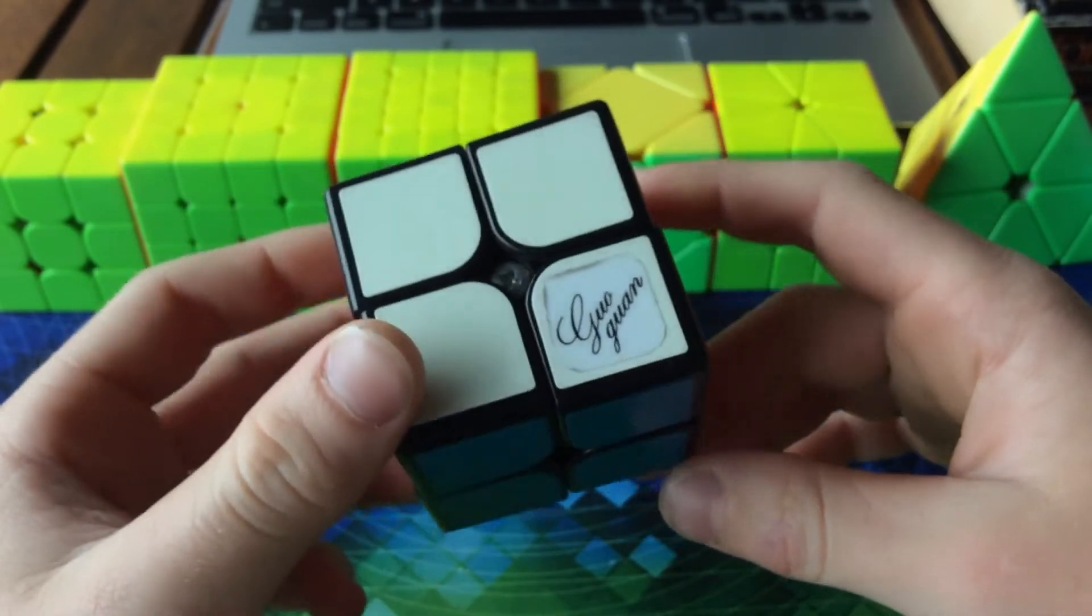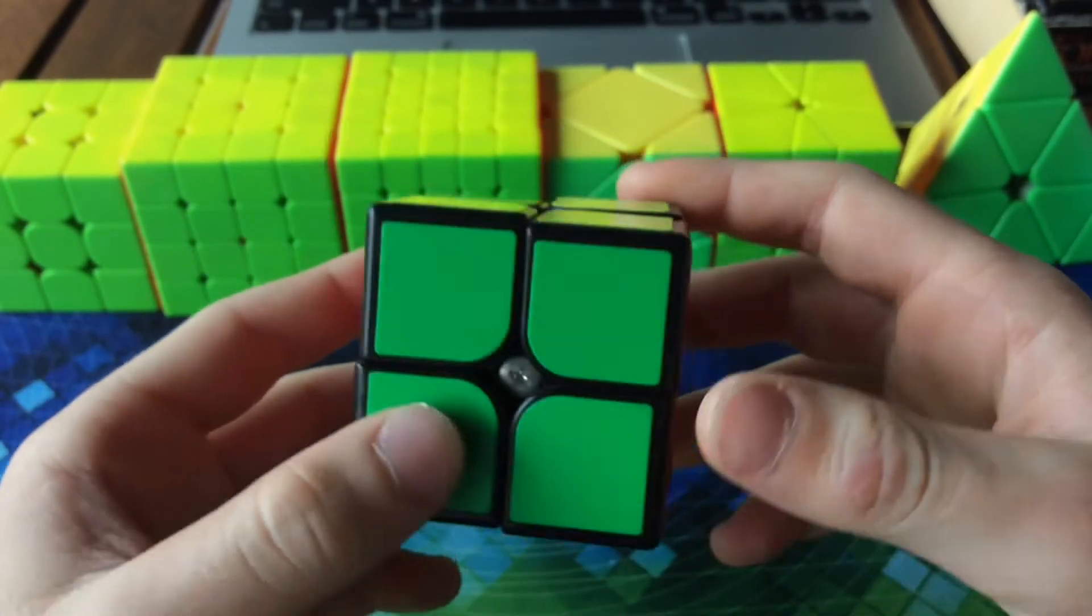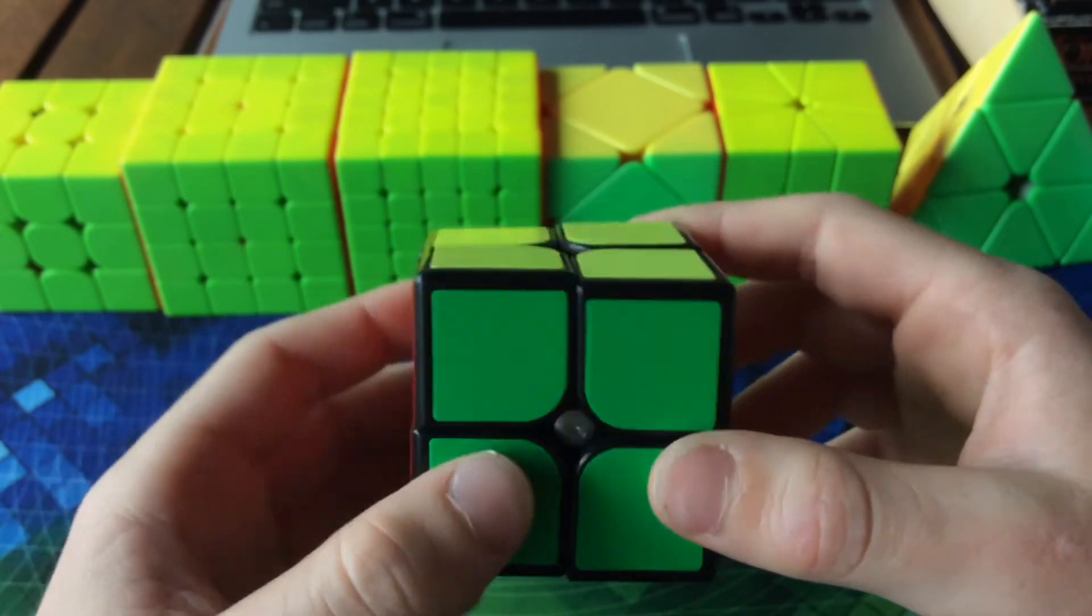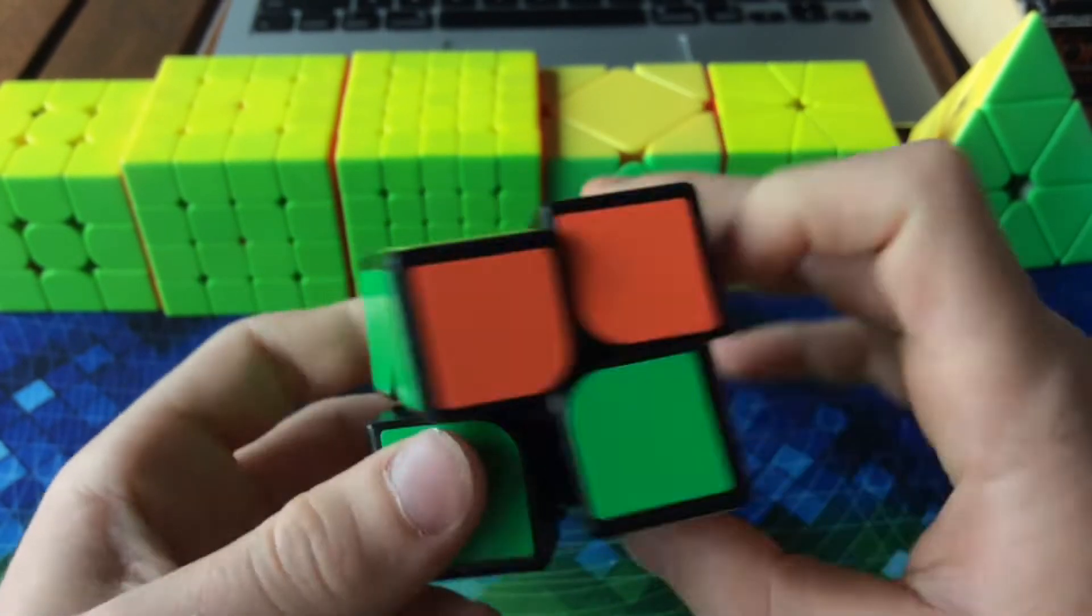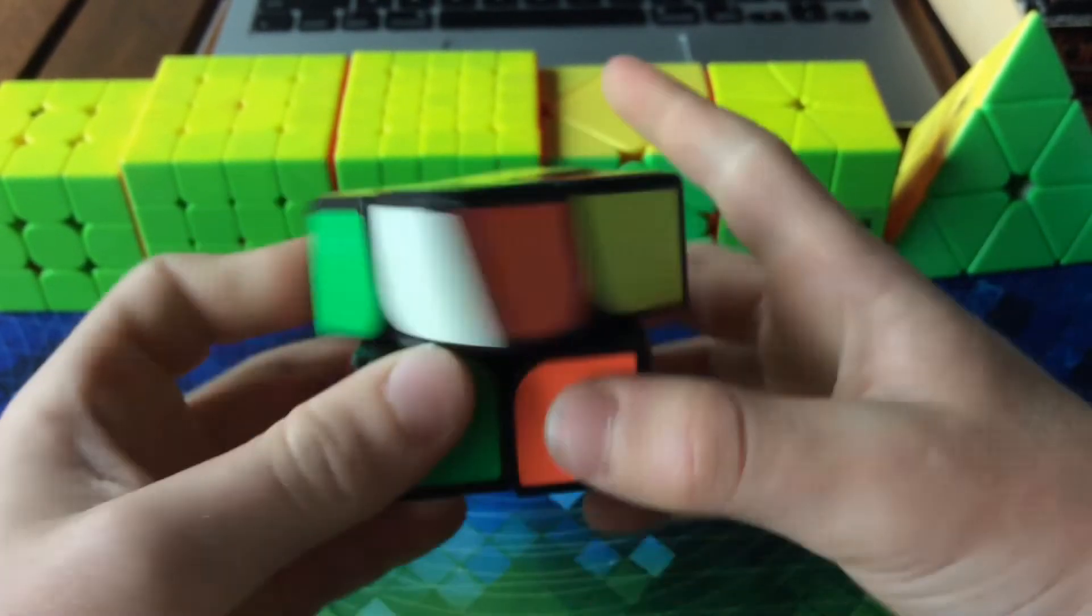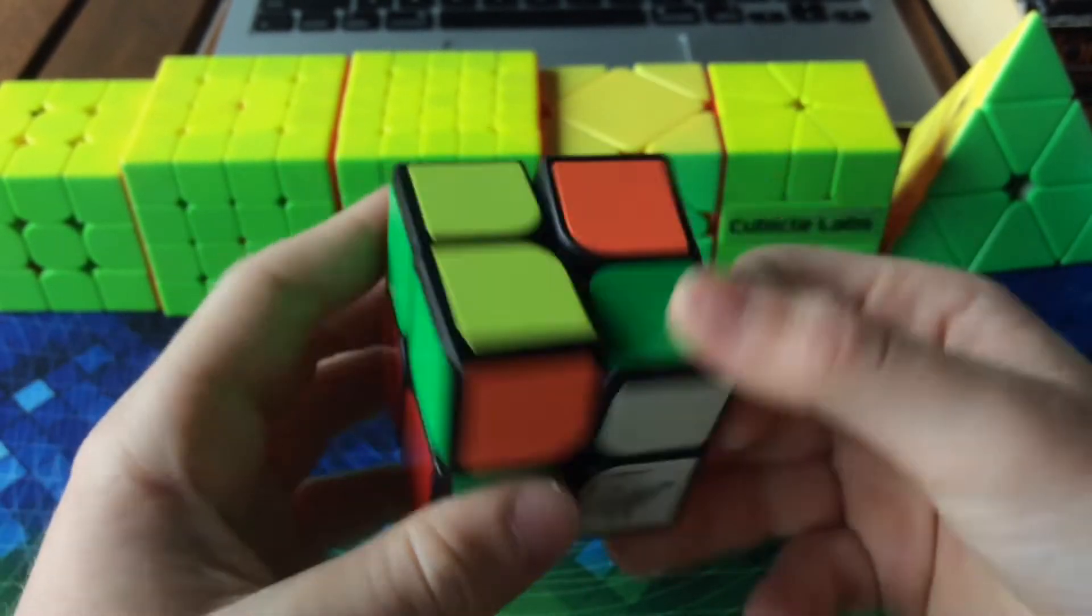For two by two, I'll be using this gold Qiyi Xinghen, not magnetic. I've had this cube for around one and a half years and it's worn out a bit, but it's still pretty fast.